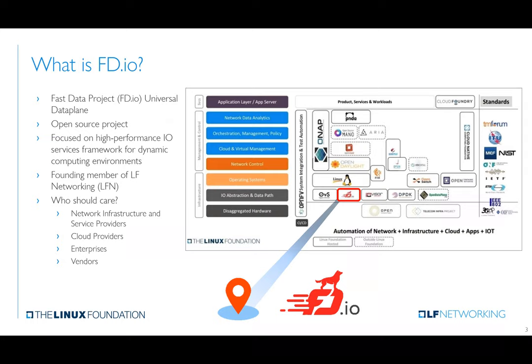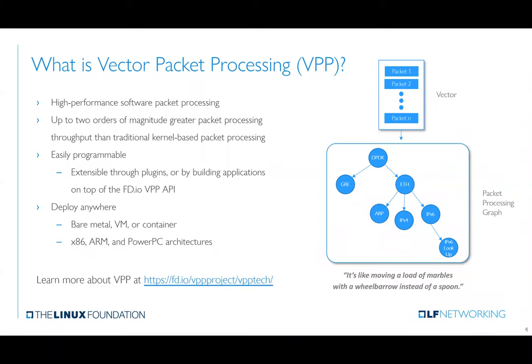Technically speaking, FIDO lives at the data plane. VPP enables high-performance software packet processing — it's all done in software, in user space as opposed to kernel space processing. It performs an action on a vector of packets all at one time, as opposed to processing a single packet at a time. This is what enables it to scale up to two or more orders of magnitude of throughput compared to traditional kernel-based processing. It takes that vector of packets and subjects them to graph node processing instructions, a set of policy controls, or program capabilities.